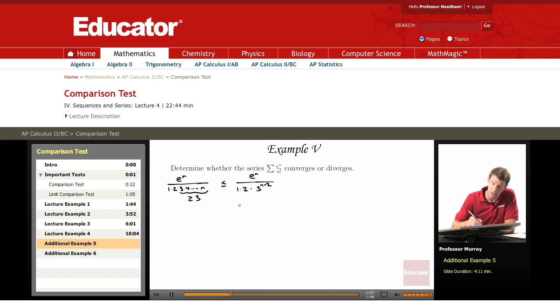Now just to make the algebra a little bit cleaner, I'm going to multiply top and bottom by 3 squared. 3 squared times e to the n over 1 times 2 times, now I can say that that's 3 to the n. So I just multiplied in 3 squared times the top and bottom so that I could have an n in the exponent instead of an n minus 2.